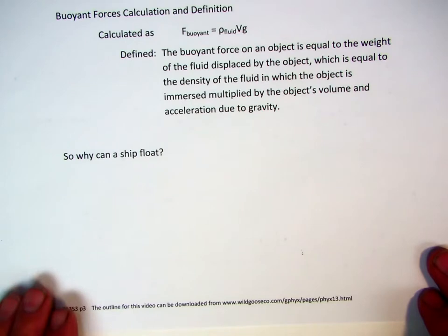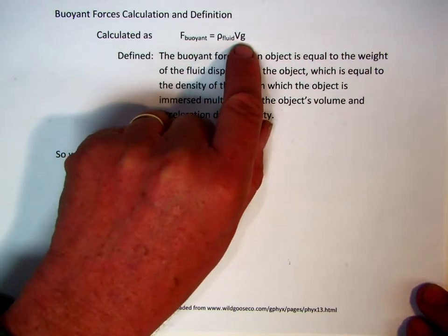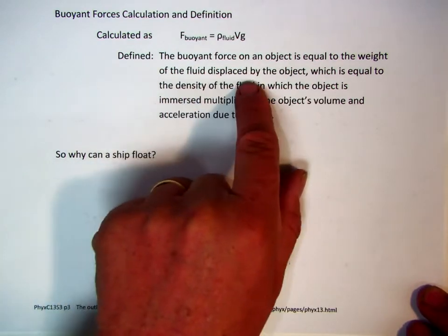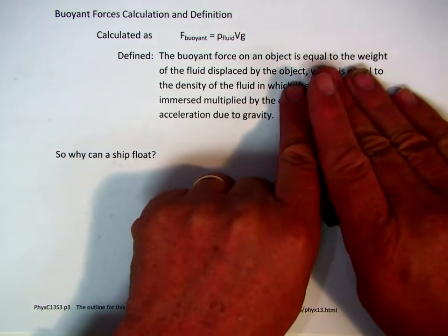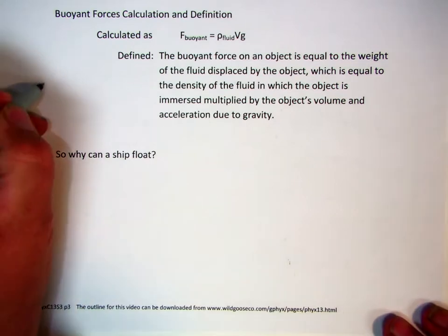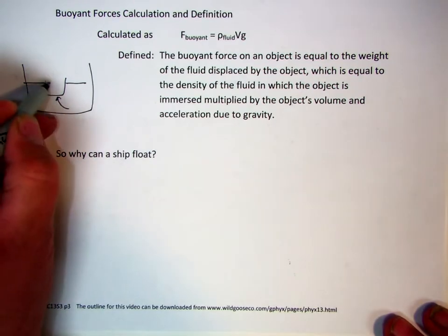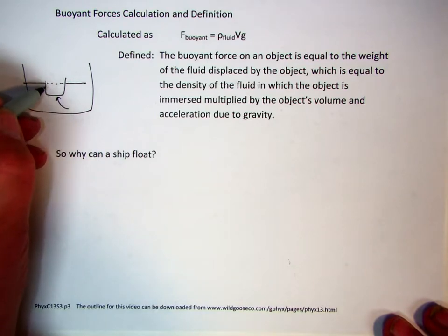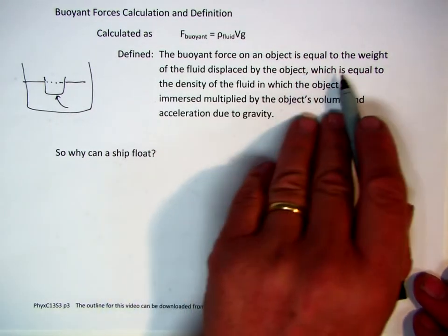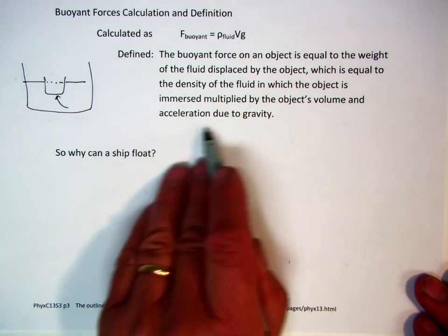Let's look at the mathematics on it. Calculations, buoyant force calculations and definition. The buoyant force is equal to the density of the fluid multiplied by the volume times the acceleration of gravity. Verbally stated as the buoyant force on an object is equal to the weight of the fluid displaced by the object. Now I'm going to spend a lot of time dealing with just that half. The weight of the fluid displaced by the object.